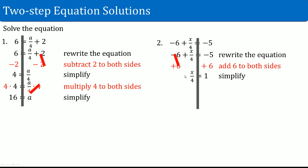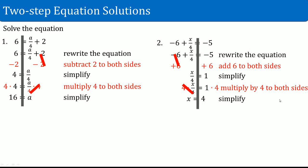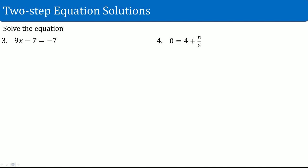Right now you have a divide by 4 left over on the left-hand side, still attached to the x. To get rid of a divide by 4, you multiply by 4. The 4s cancel out, and what you have left over on the left-hand side is just an x. Once you multiply 4 to the other side, 1 times 4 is 4. So x equals 4.